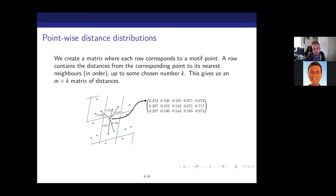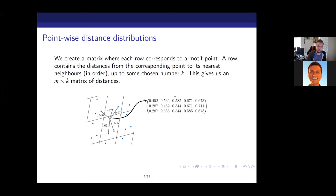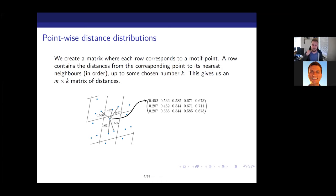We pick some number k and record up to that many neighbors, ending up with k columns and m rows where m is the number of motif points. We've chosen to work with distances between points because they are by definition isometrically invariant — that's what isometry means, a distance-preserving transformation. So this is a good place to look for something preserved when you rotate or translate your structure.